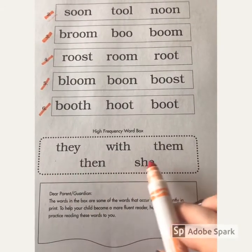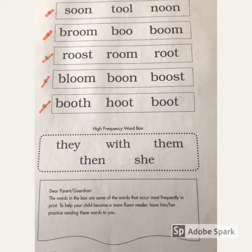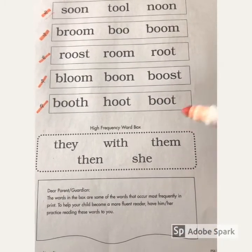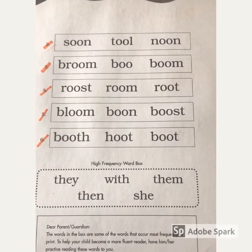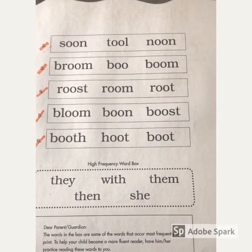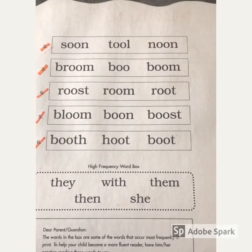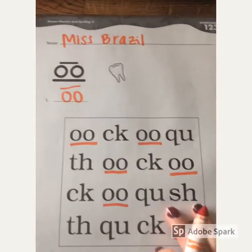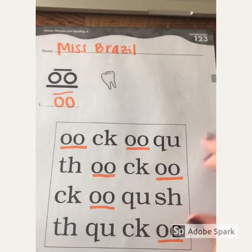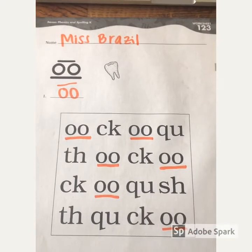Then you can look at the box at the bottom with some sight words, and I want you to try to read some of these words to either mom, dad, brother, sister, grandpa, or grandma — whoever's with you. Try to read them to yourself too. Make sure your name's on your paper, and this goes back into your packet to come back to me on Monday. Awesome job!